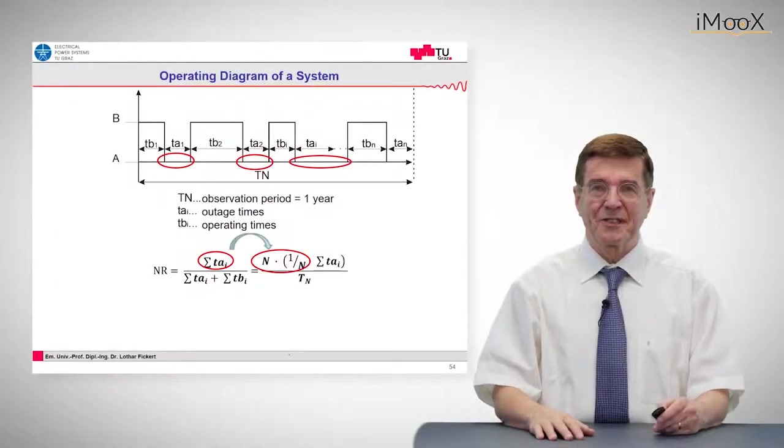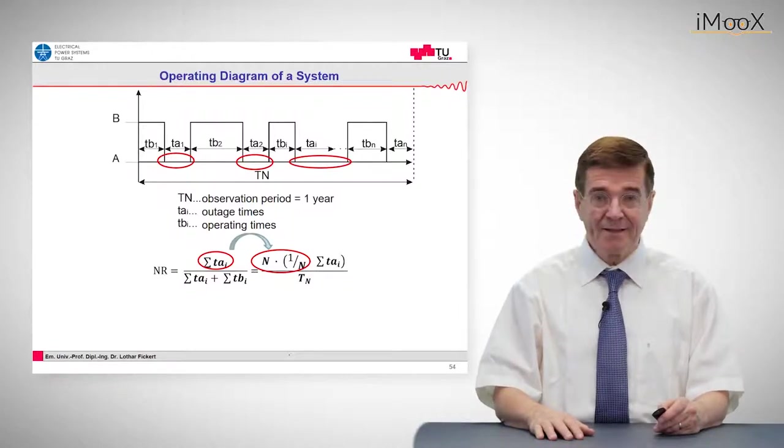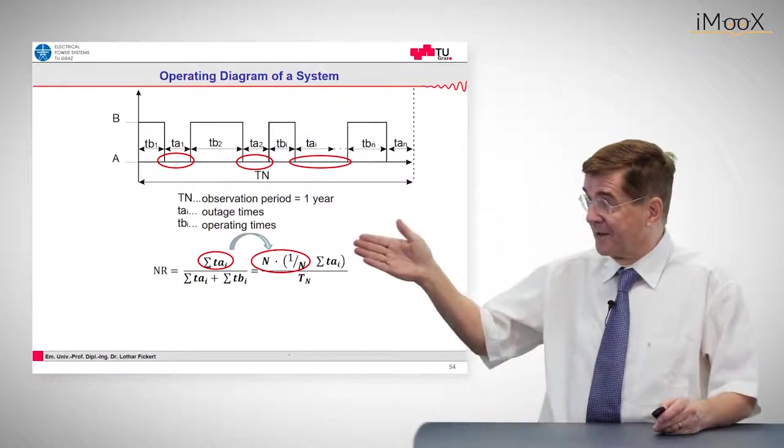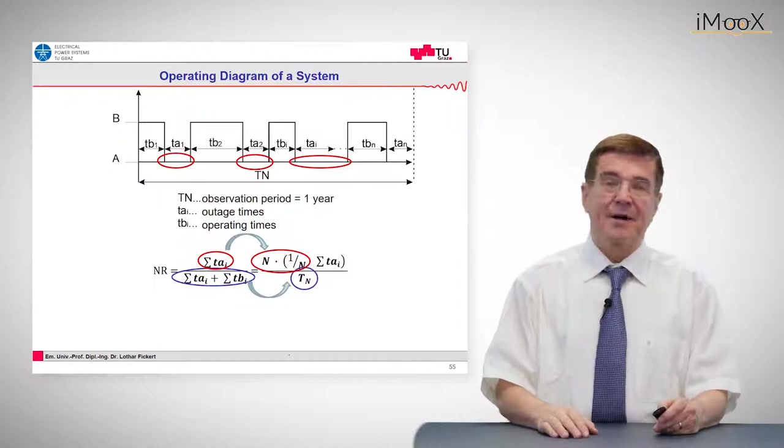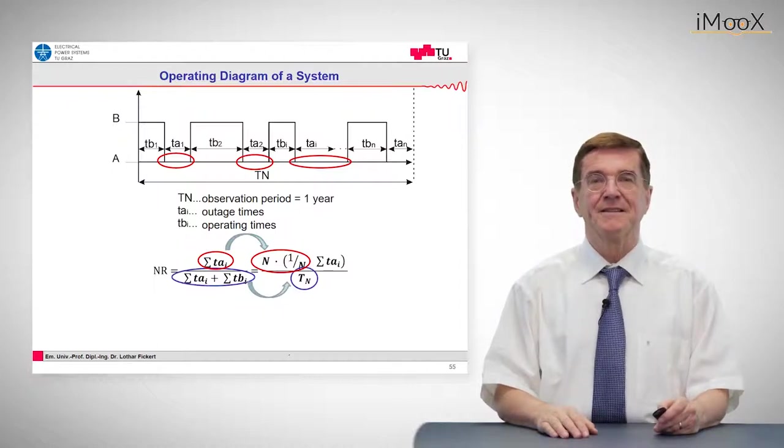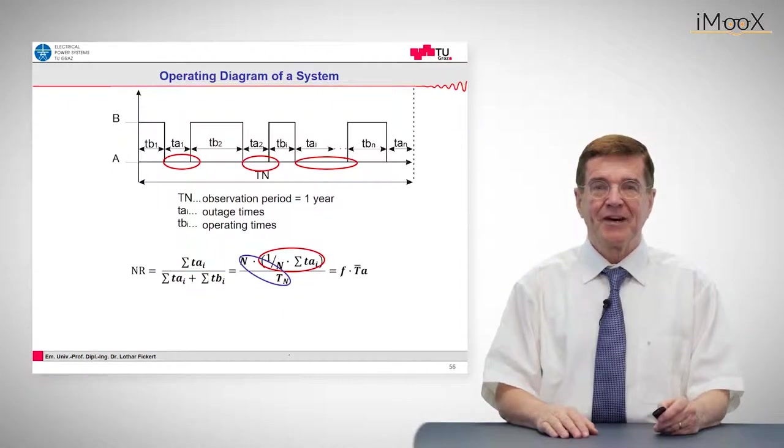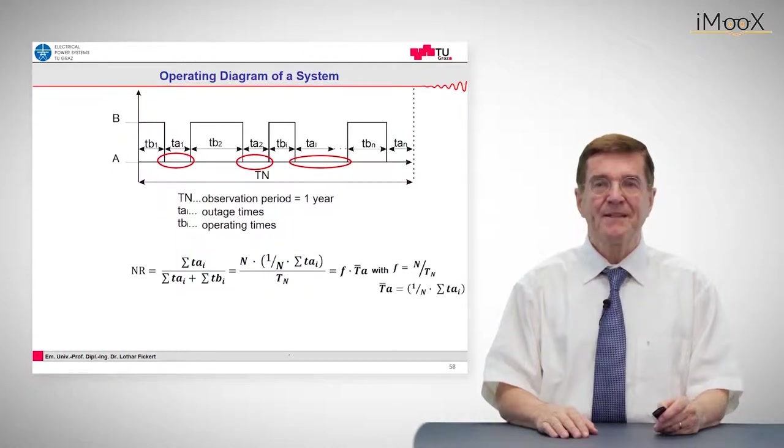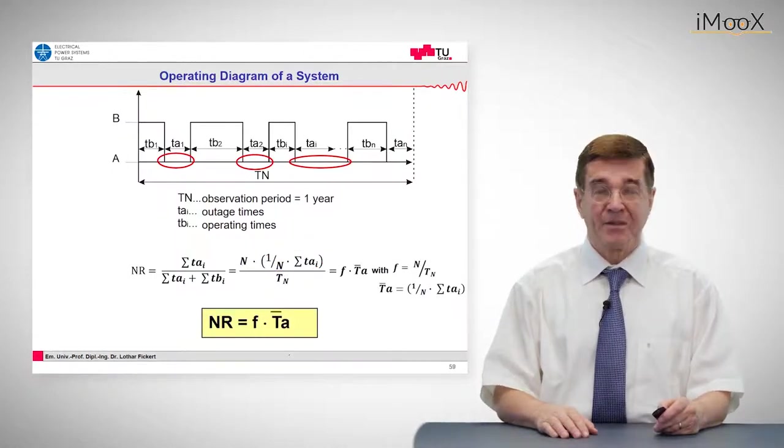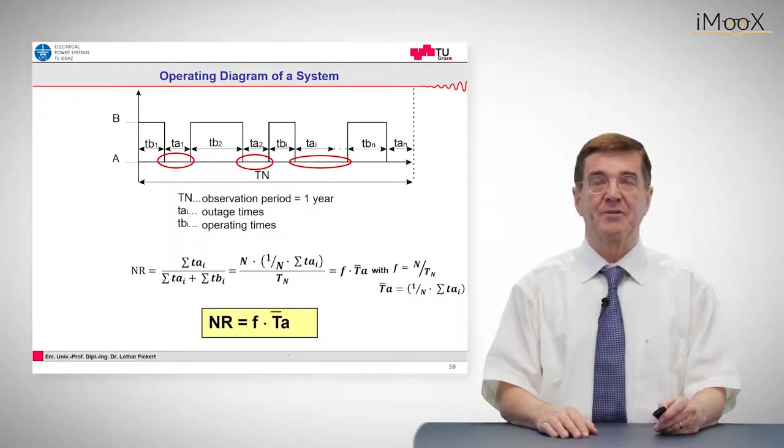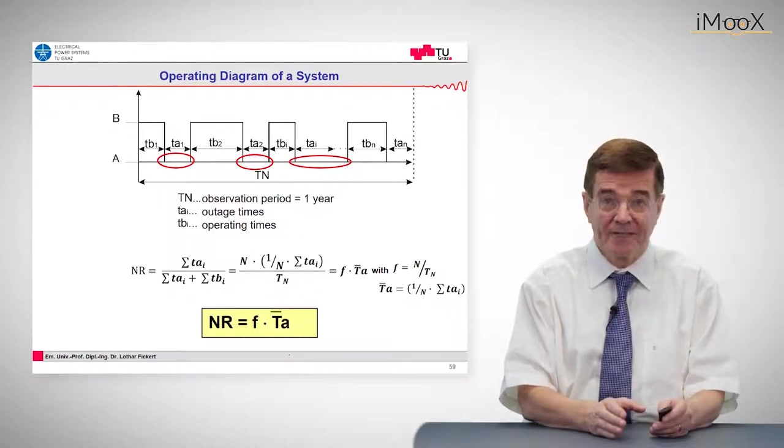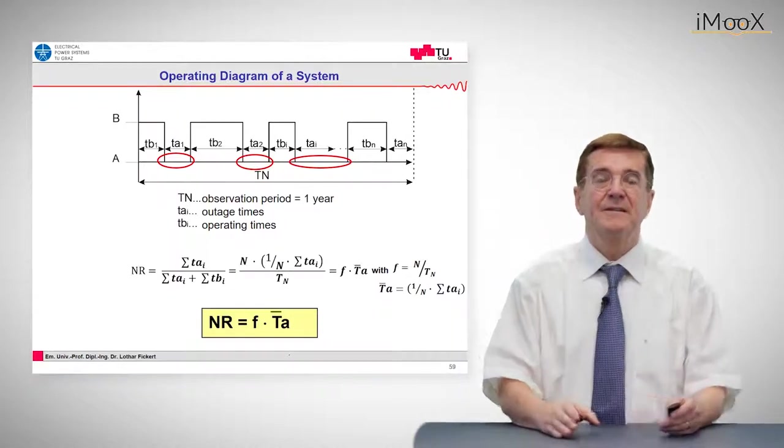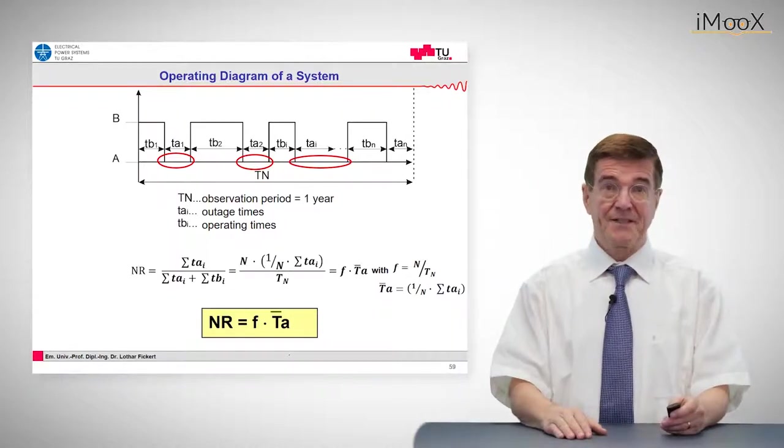These are summed up and put in relation to the total observation time. By applying a trick to modify the numerator - multiplying it by one - and summarizing the denominator, we finally arrive at the well-known formula that the non-reliability is given by the product of the frequency, how often an event occurs, and the average outage time TA.